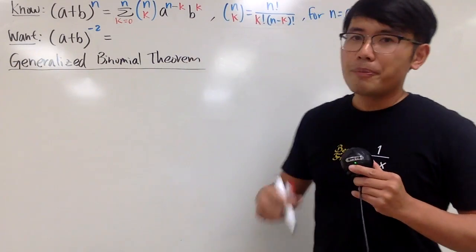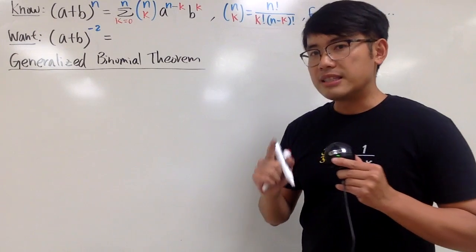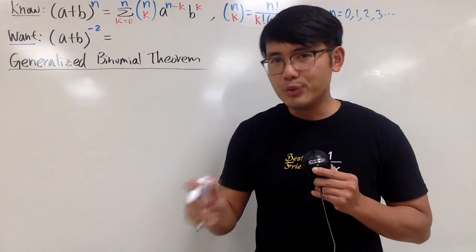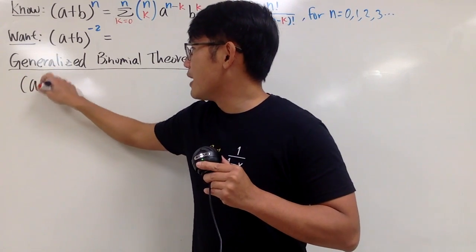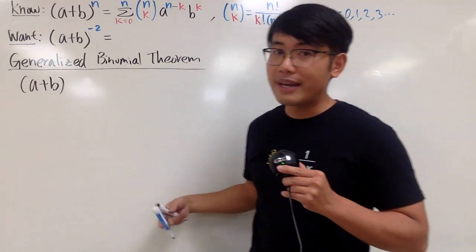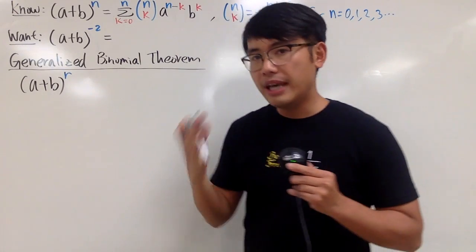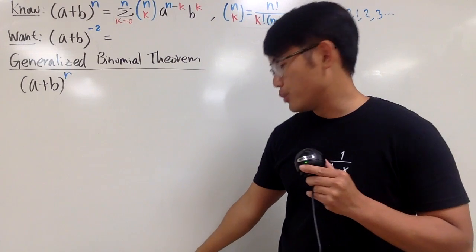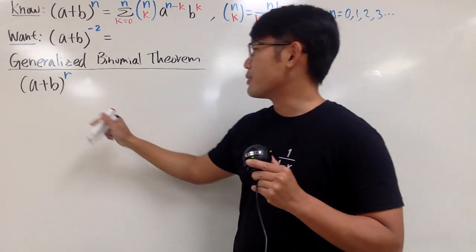The theorem statement is actually really similar, except instead of n, you can have any real number that you want. So let me write down (a + b) to the r, where r represents any real number — including negative, including fractions, including irrational numbers, and all that.